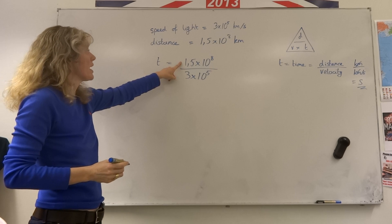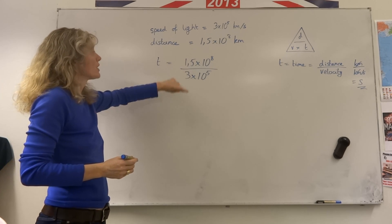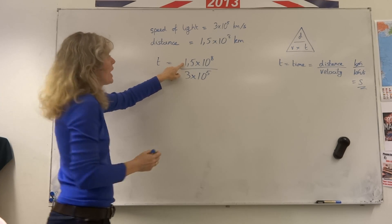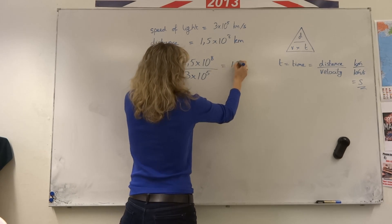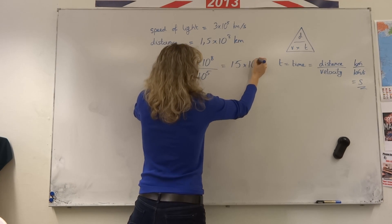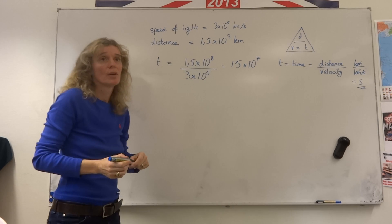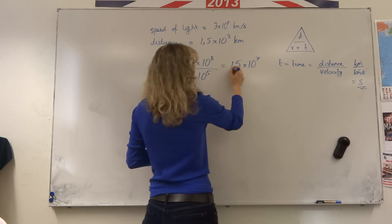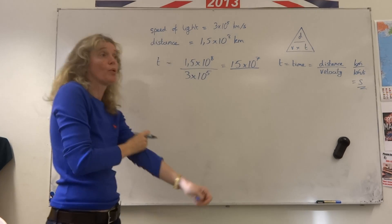The smart thing to do here is to actually change this into 15 times 10 to the power 7. If I do that, I don't make a silly mistake with decimal points.